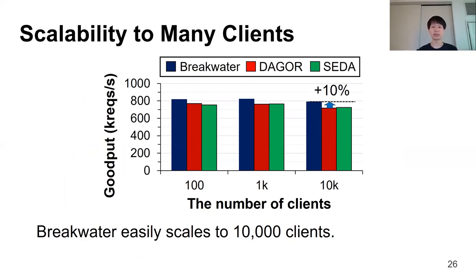To demonstrate scalability to a large number of clients, with fixed client demand at twice the server capacity, we vary the number of clients and measure the goodput of the three overload controls. Even though all three systems experience goodput degradation as the number of clients increases, Breakwater demonstrates the least degradation, achieving 10% higher goodput compared to Dagor and Theta with 10,000 clients.